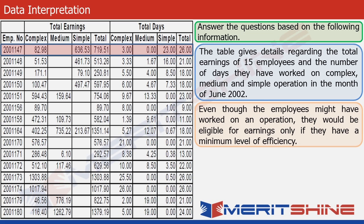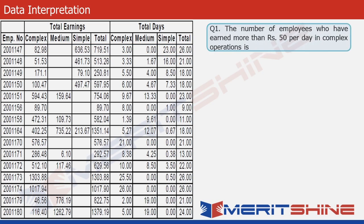We have also been told that despite working on an operation, an employee might not earn anything out of it if his or her efficiency does not match a certain level. For example, employee number two has worked on medium operations for 1.67 days, but the table does not show any earnings for him from this. So that was about the data — now let's go to the questions.